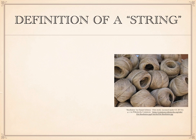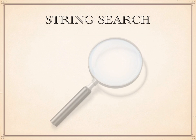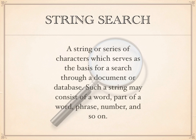In the context of computer jargon, the word 'string' refers to a finite sequence of characters such as letters, numerals, syllables, and punctuation marks. Therefore, a string search uses a series of characters to search through a document or database. Such a string may consist of a word, part of a word, a phrase, a number, and so forth.